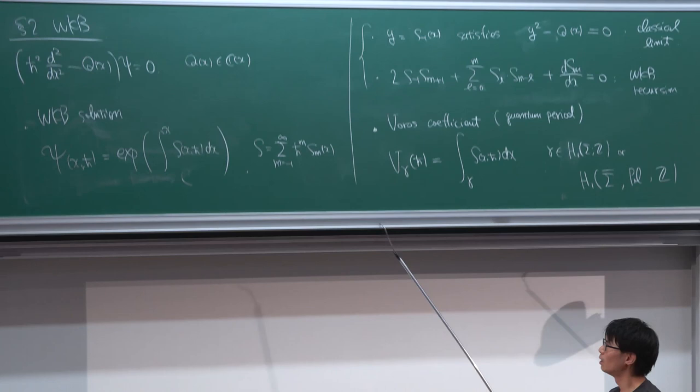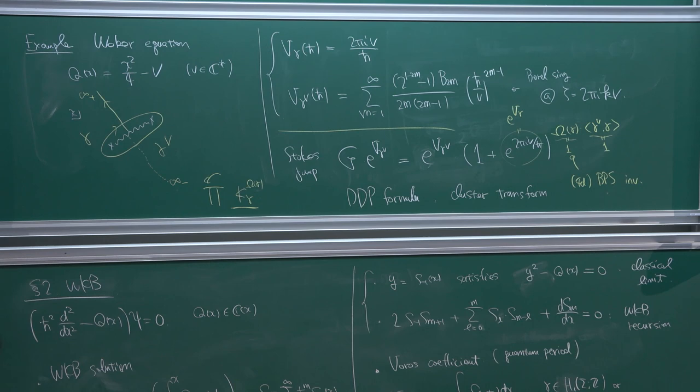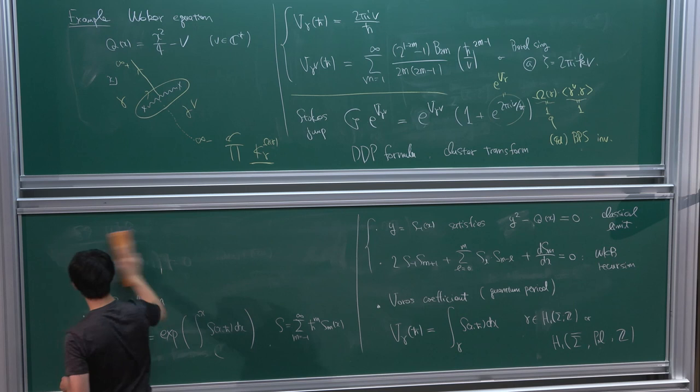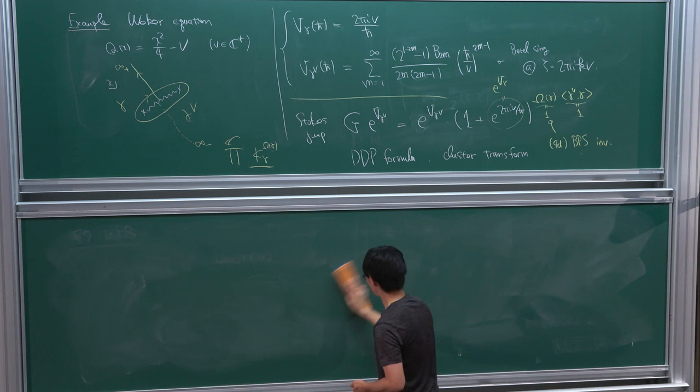As I said, in general, topological recursion quantization and Nekrasov-Shatashvili quantization are different. But there is a class where both are essentially the same. This I observed with Osuga-Wai. Let me explain some results.